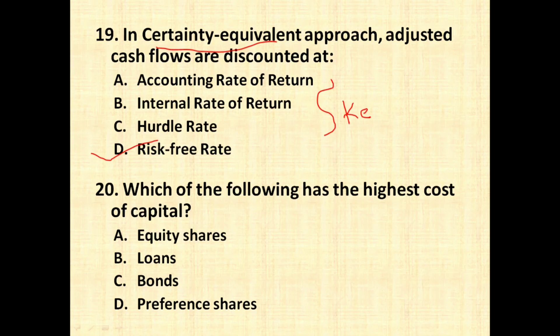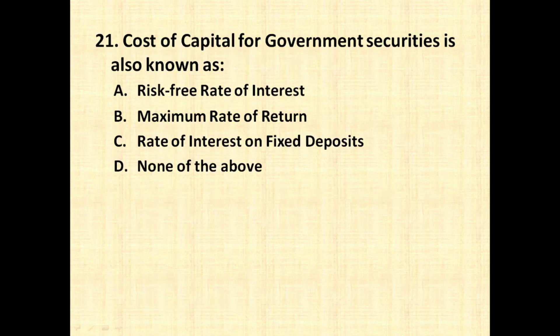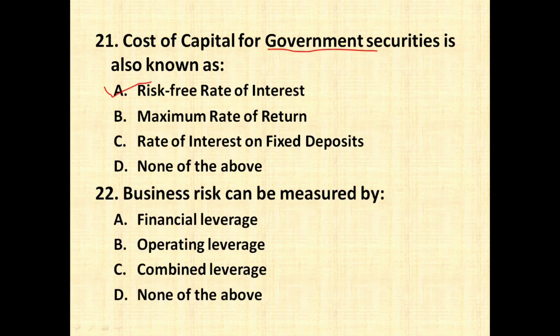The next question is: which of the following has the highest cost of capital — equity shares, loan, bonds, or preference shares? We know that equity shares always carry the highest rate of return; KE is always greater than all other costs — it is the most costly among all financing options. The next question is: cost of capital for government securities is also known as what? Since government securities are risk-free, their cost of capital is the risk-free rate of return.